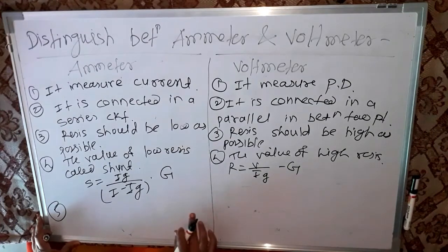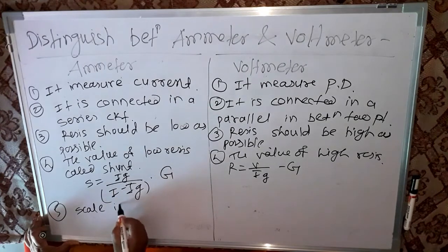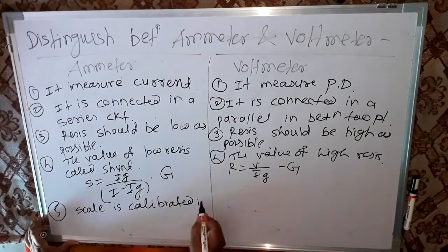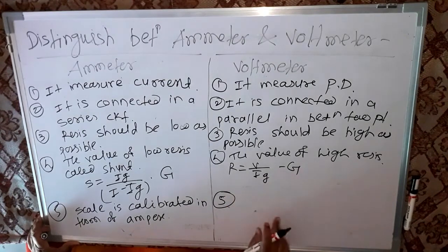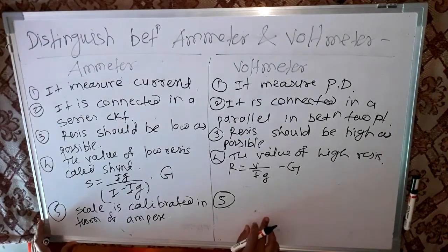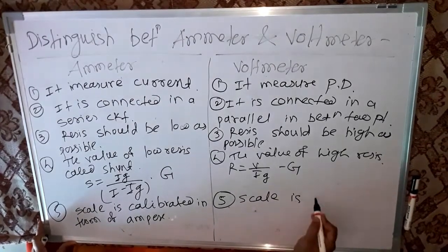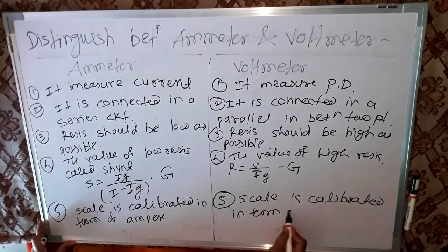Fifth point: the ammeter scale is calibrated in terms of ampere. In opposite, the voltmeter scale is calibrated in terms of volt.